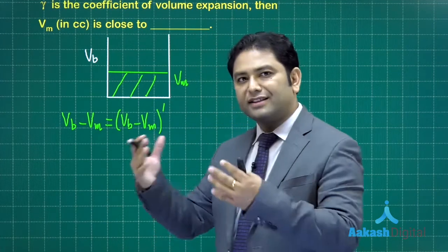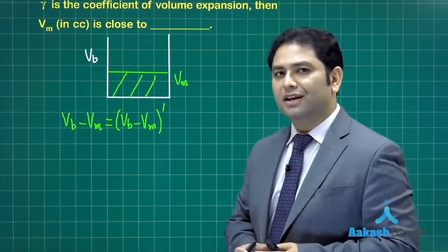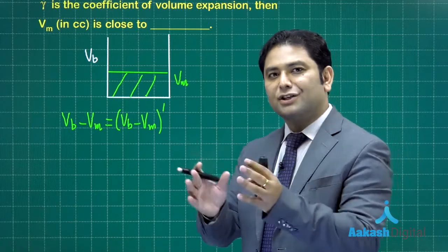That has to equal Vb minus Vm dash. While the temperature increases, both the volume of bakelite and mercury increase, but we want the difference to be same.